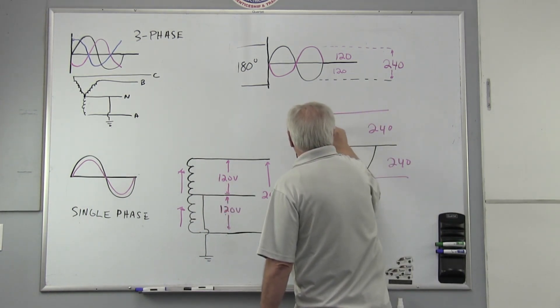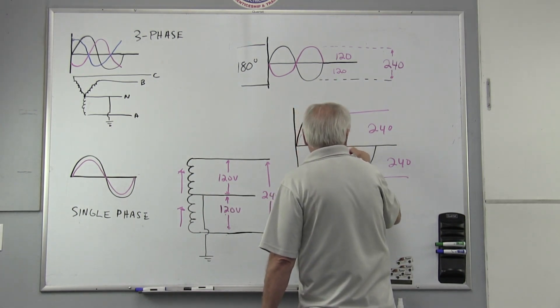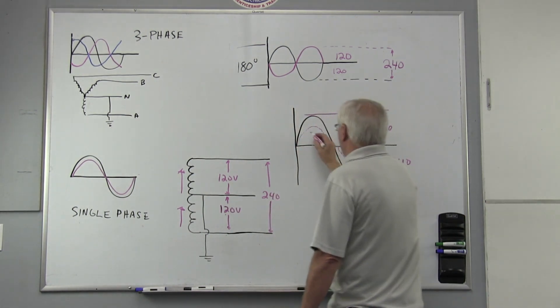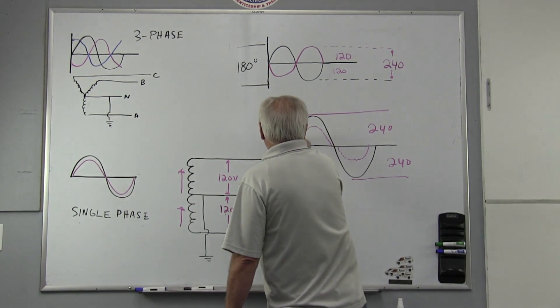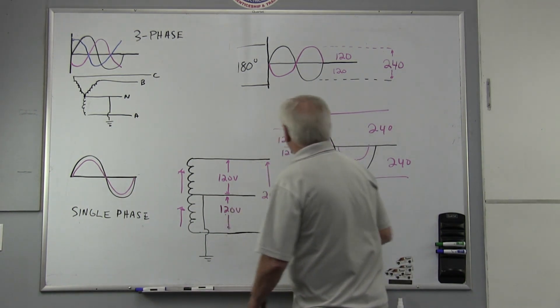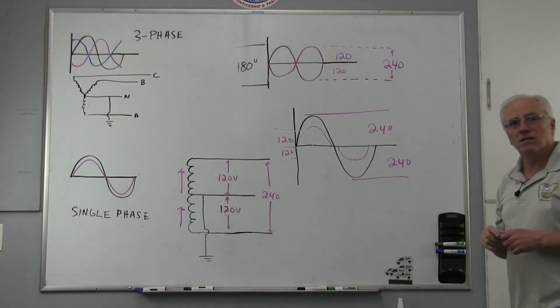It would come up like this, like this, and it'd be half of it here. It'd be the 120 volts—120 there, 120 there, 120 there. It all is developed on one sine wave, but it appears to be two because of this.